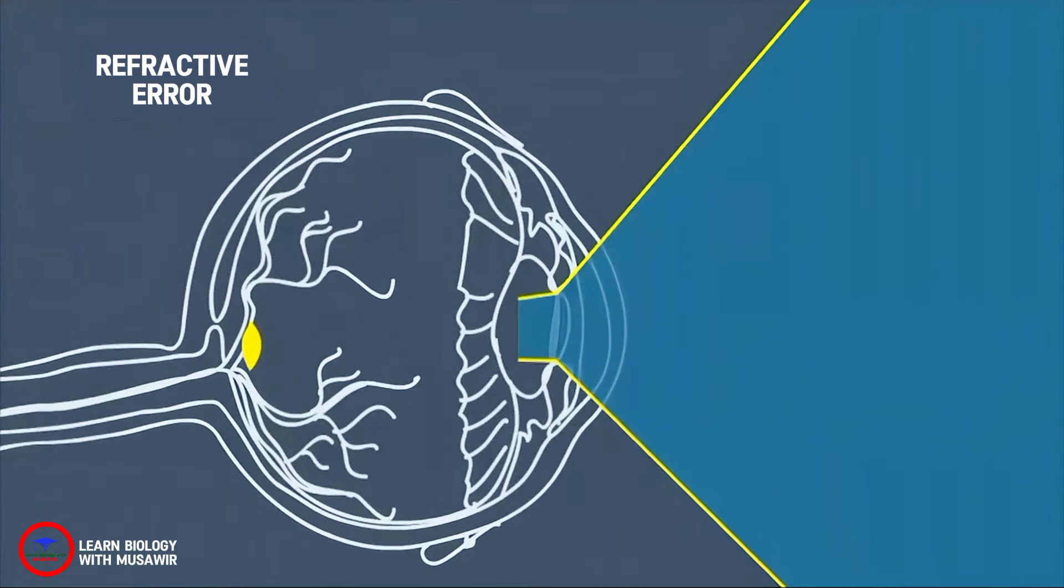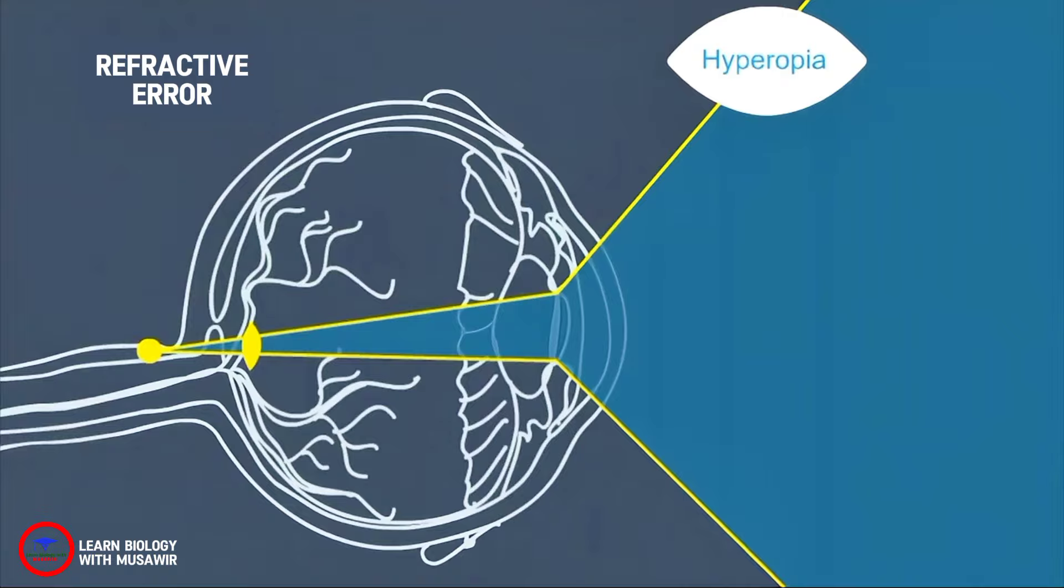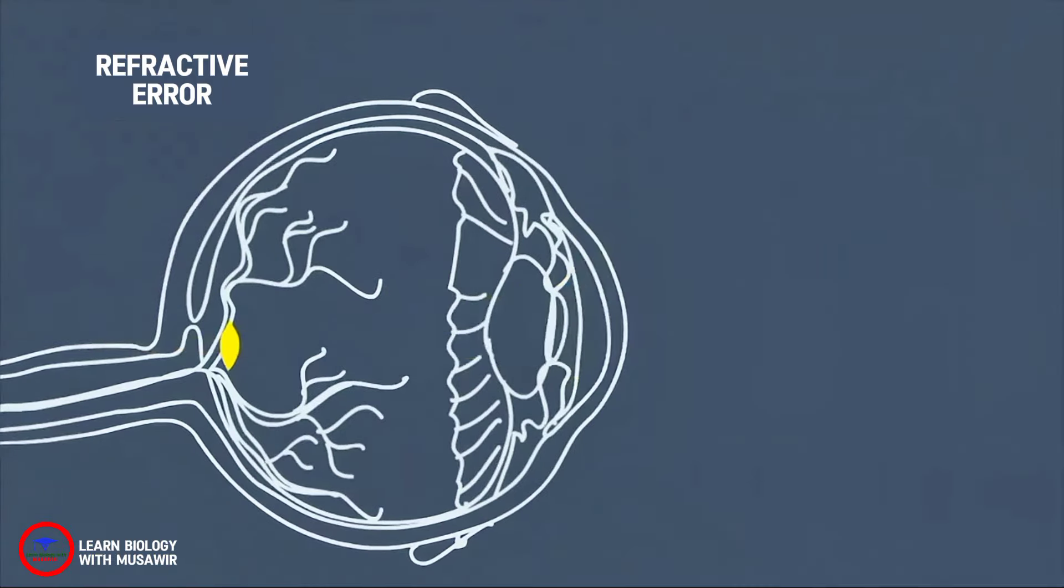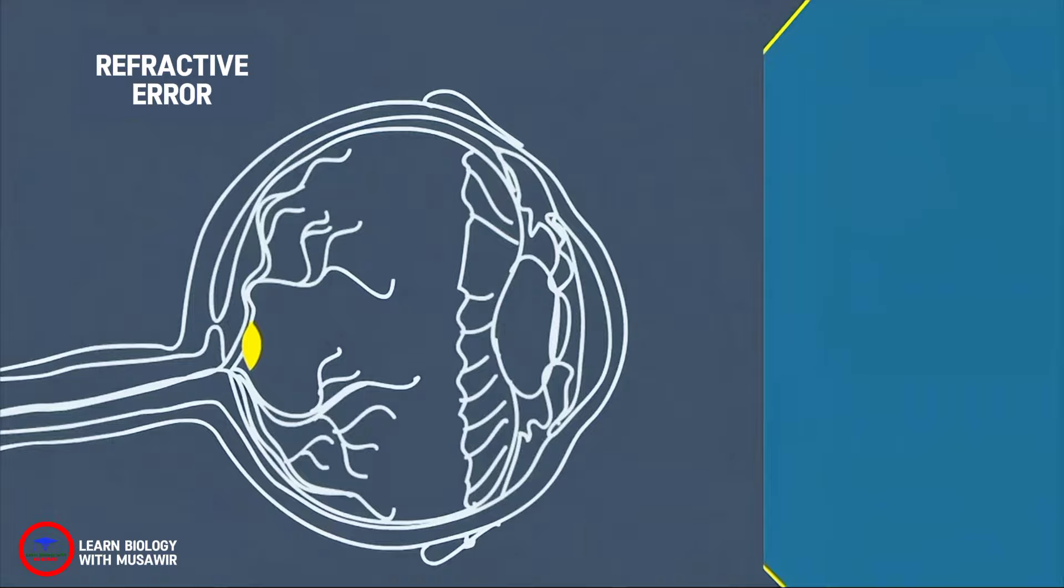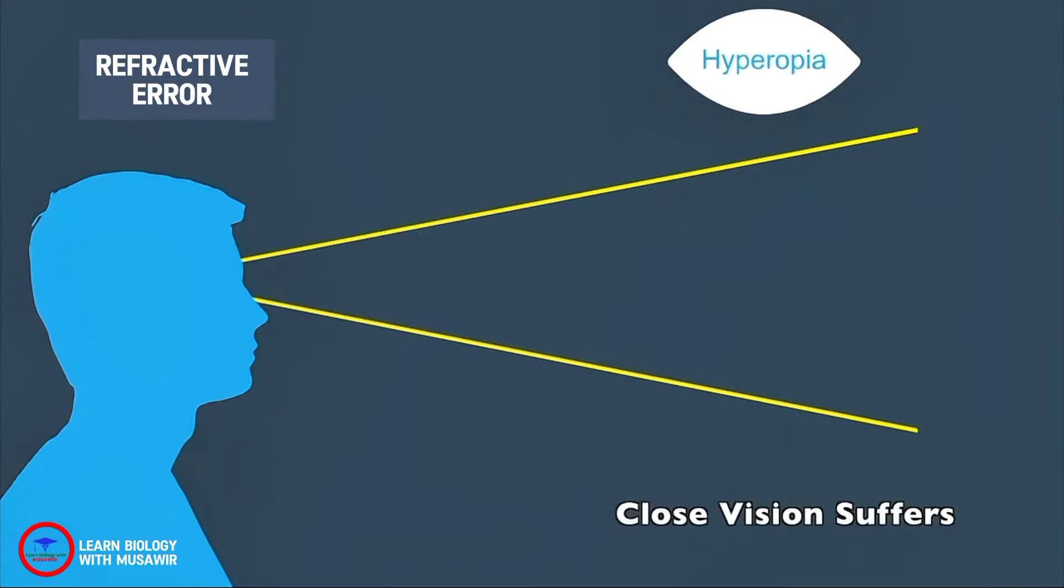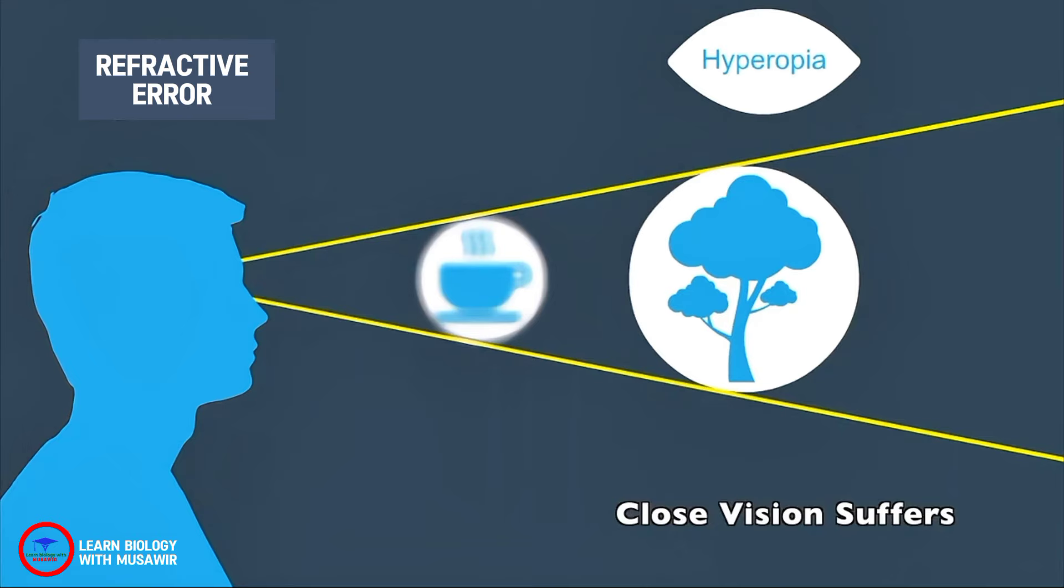Hyperopia, or farsightedness, is when the light rays are focused behind the retina instead of on it. This can happen when the eyeball is shorter or there is a change in the focusing power of the cornea or lens. Distant objects will appear clear, but closer objects will appear blurred.